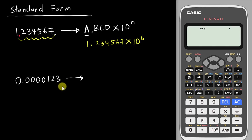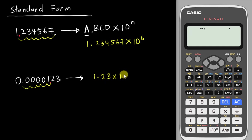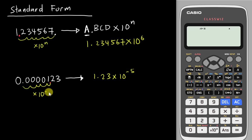How about this number here? The decimal is over here. I want to move it between 1 and 2, because I can only accept one number followed by the decimal. Then I move 1, 2, 3, 4, 5. So this one is 1.23 multiplied by 10 to the power of negative 5. When you move the decimal from right to left, it's multiplied by 10 to the power of positive n. But if you move the decimal from left to right, it's multiplied by 10 to the power of negative n.